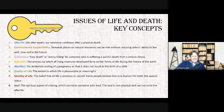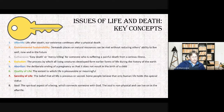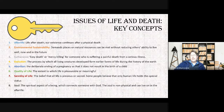Euthanasia means easy death or mercy killing for someone who has suffered a painful death or serious illness. Evolution is the process by which all living creatures develop from earlier forms of life during the history of the earth. Abortion is the deliberate ending of a pregnancy so that it does not result in the birth of a child. Quality of life is the extent to which life is pleasurable or meaningful.